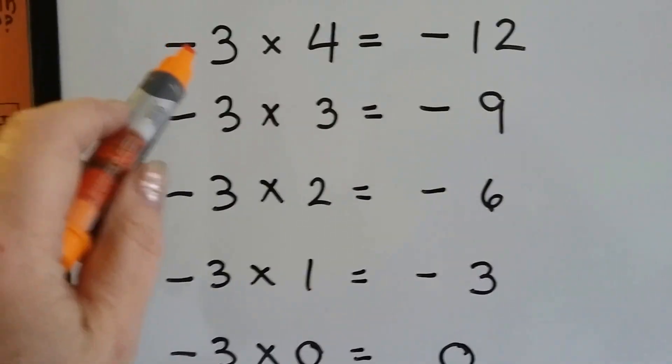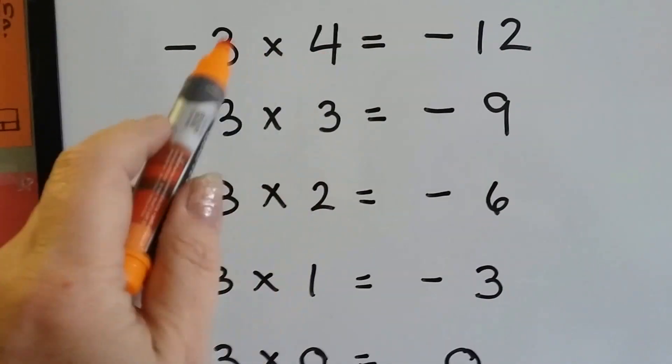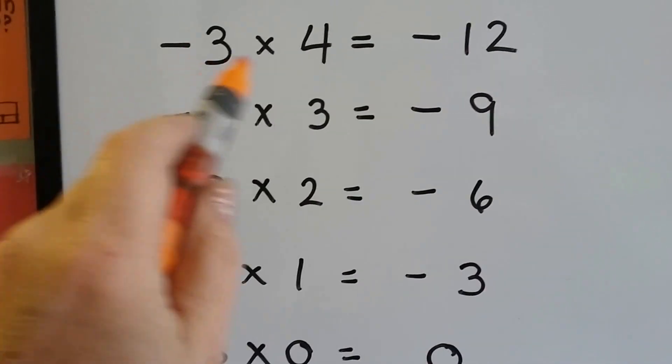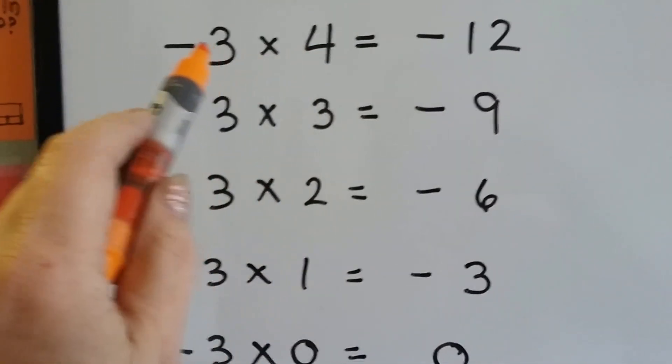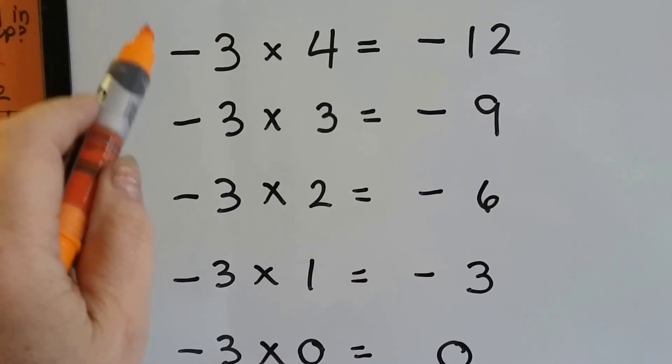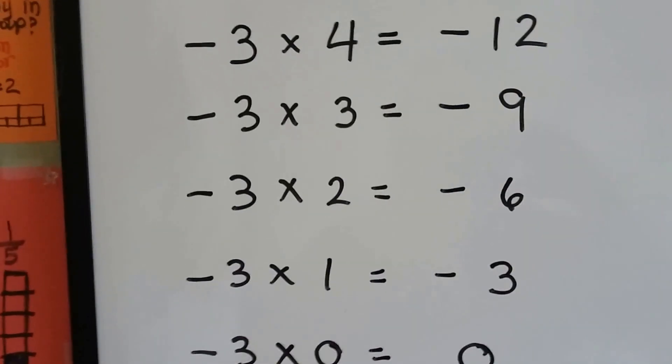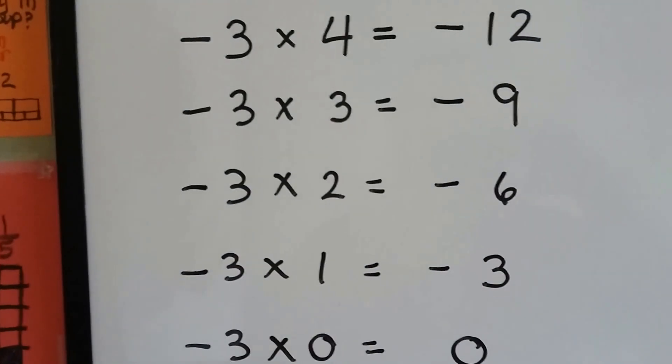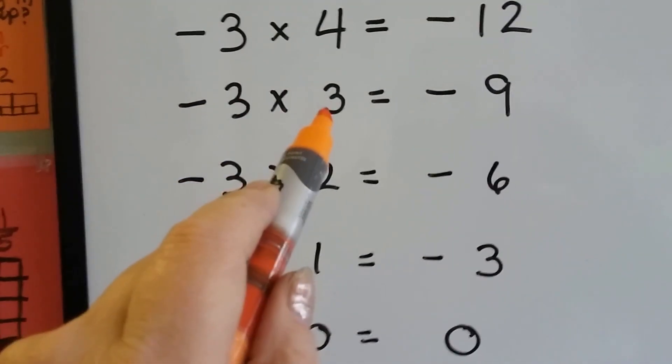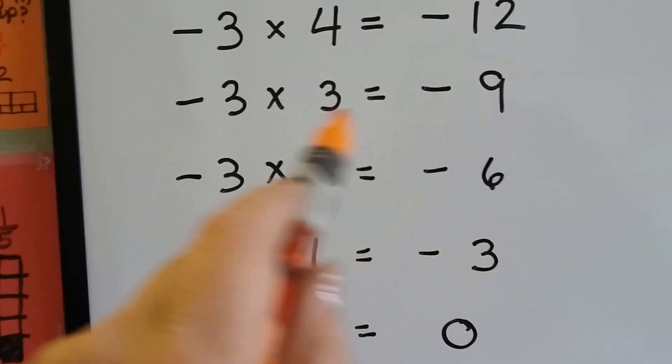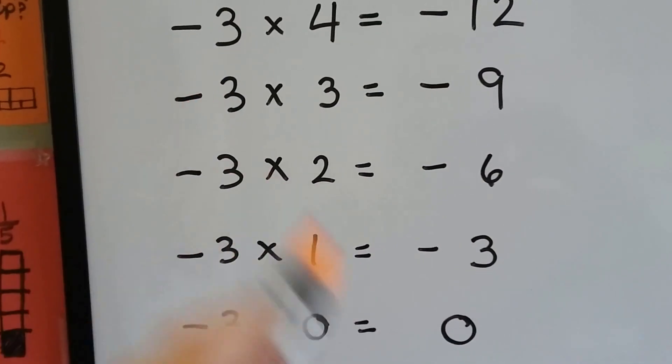Alright, we've got negative 3 times 4. Well, we know from our last video that if we have a negative 3 four times, that's negative 3, negative 3, negative 3, and negative 3. So we have a negative 12, because we have 4 of them. When we have a negative 3 three times, it's going to be a negative 9. We've got 3 negative 3's, see?